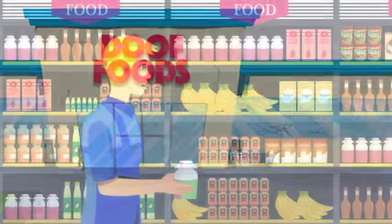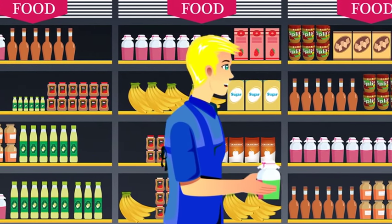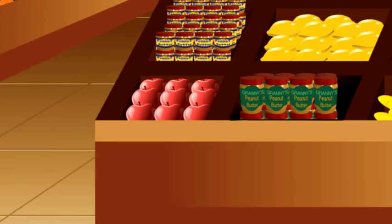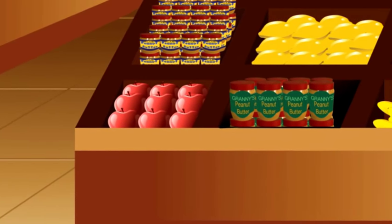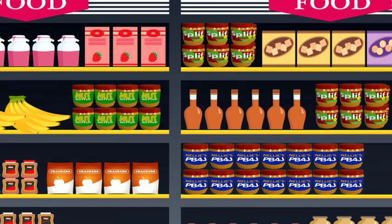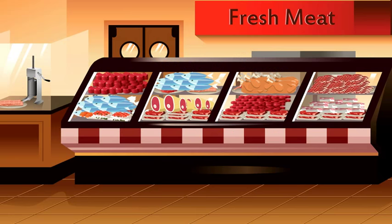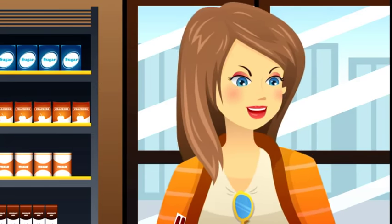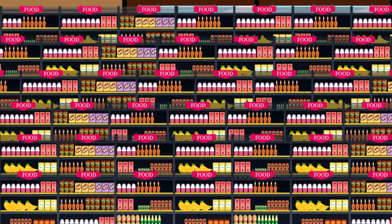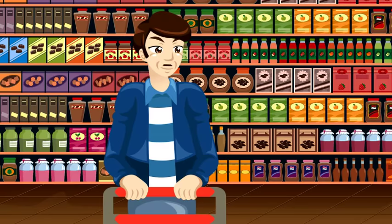In this grocery store, the workers have placed the products wherever they want, so they themselves can find them later. So two brands of peanut butter are on one side of the store next to the apples, and three brands of peanut butter are over next to a box of crackers. The milk is next to the beer. All of the fish, chicken, and beef is stuffed into a single meat counter. When the customers come in, they have no idea where anything is, and after spending a lot of time searching, they'll have to ask someone.